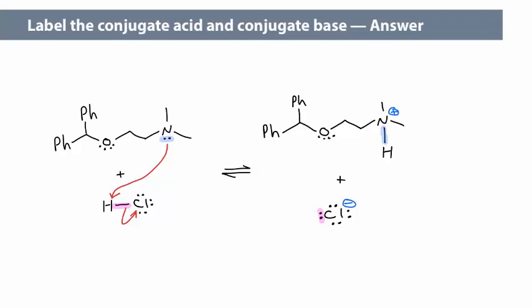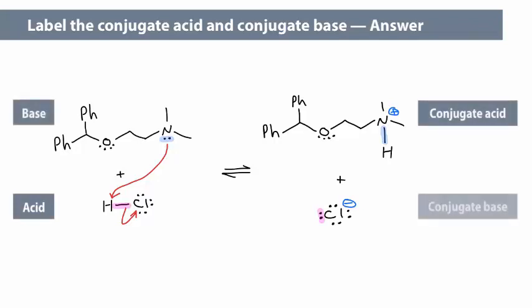Every time we draw the mechanism to protonate or deprotonate an atom, we end up drawing the conjugate acid or conjugate base. We can label the acid, base, conjugate acid, and conjugate base.